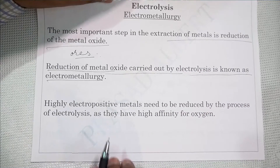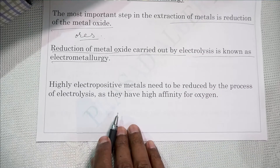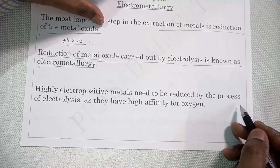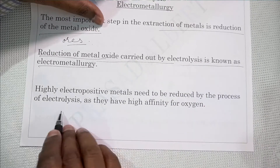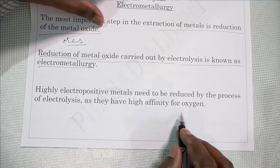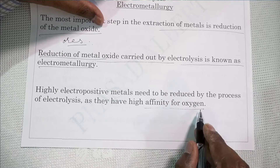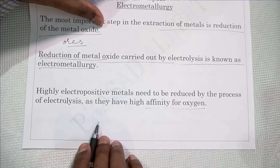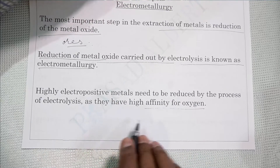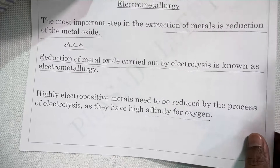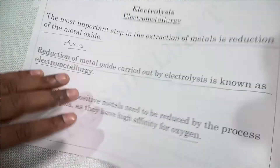Highly electropositive metals need to be reduced by the process of electrolysis, as they have high affinity for oxygen and other techniques do not work here. They need to be reduced by electrolysis.